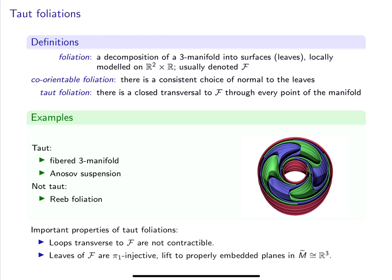Here are some examples of taut foliations. A fibered manifold is always taut. A second example that will be relevant later today is an Anosov suspension, which is a certain foliation on a T² bundle over S¹. To specify such an example, we need a map φ from T² to T² that is hyperbolic. Now foliate T² by one of the eigen directions of φ, and take a product with an interval.